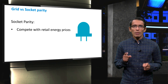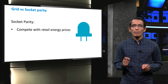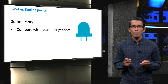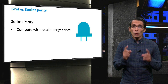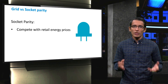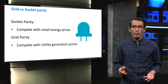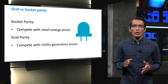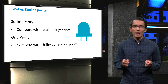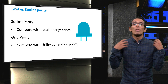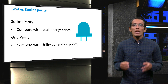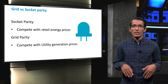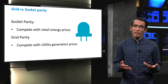Socket parity refers to the moment when the LCOE of solar becomes lower than the retail price of electricity — the price you pay per kilowatt hour on your electricity bill. Grid parity, on the other hand, refers to the moment when solar energy is cheaper than the amount that a power plant spends on producing the energy. The energy production cost will always be less than the retail energy cost since energy producers have to make a profit.